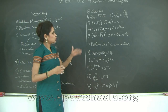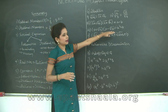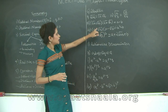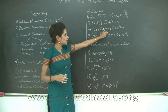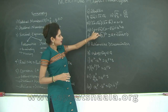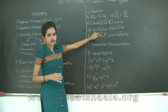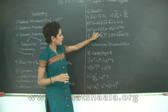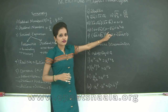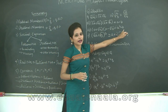The fourth identity: you have (a + √b)(a − √b). This is similar to the third identity except the first terms are not under a root. This gives you the square of the first term minus the square of the second term — so a² minus b.